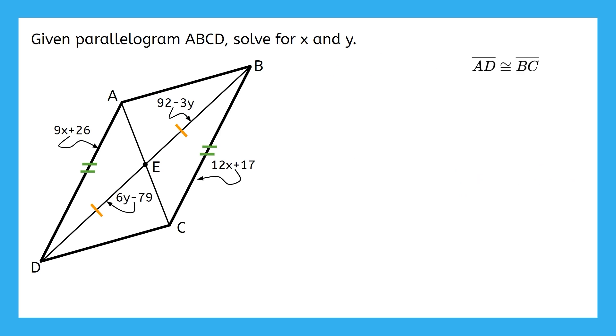Let's start with segments AD and BC. Since they are congruent, we know that their lengths will be equal to each other. This means I can write 9X plus 26 equals 12X plus 17. From here, it's just a matter of solving my equation. I subtracted 9X from both sides to get 26 equals 3X plus 17. Then I subtracted 17 from both sides to get 9 equals 3X. Finally, I divided both sides by 3 to get 3 equals X, which is one half of my final answer to this problem. You may have solved this equation using a slightly different method, and that is totally okay as long as you also got 3 for X as your final answer.